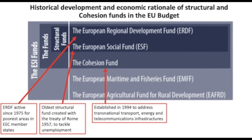The European Maritime and Fisheries Fund and the European Agriculture Fund for Rural Development are also now part of the ESI Funds. These address sectoral, structural, and competitiveness problems in these areas. They are not regionally pre-allocated — they are organized by problem areas. They were added to the ESI Funds to respond to the need for coordination in areas where they overlap with other funds.